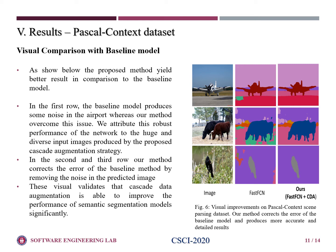Visual results. We compare the effectiveness of our method with other baseline networks. As it can be seen, the proposed method yields better results in comparison to the baseline model. In the first row, the baseline model produces some noise in the airport, whereas our method overcomes this issue. We attribute this best performance to the huge and diverse input images produced by the proposed cascade augmentation strategy. In the second and third rows, our method corrects the error of the baseline method by removing the noise in the predicted image. These visual results validate the effectiveness of the proposed method.